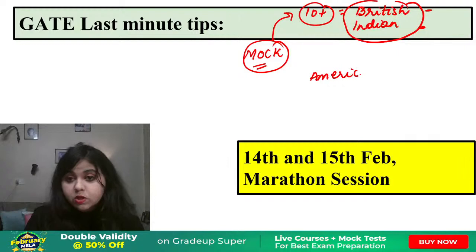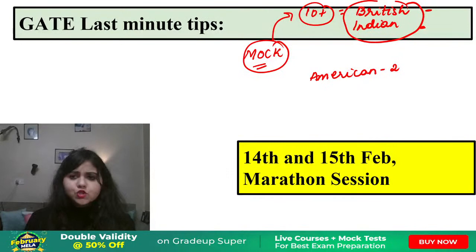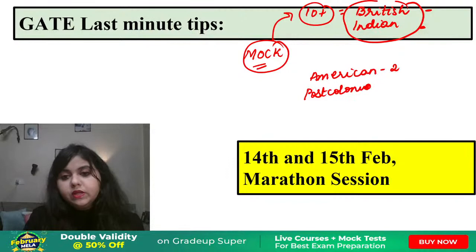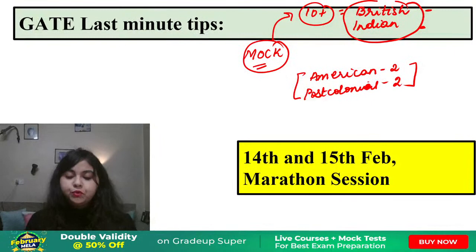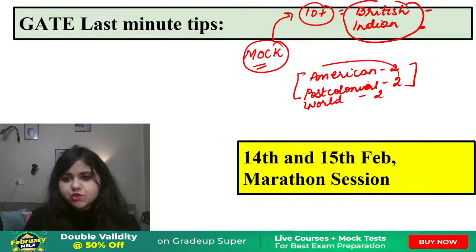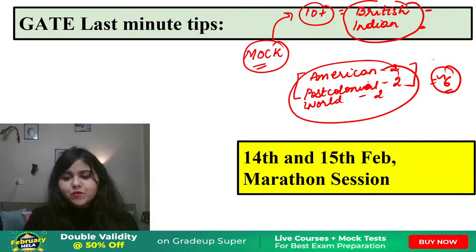They've given questions related to American writings - approximately two to three questions on American literature, including Afro-American writers like Morrison. There were also questions from post-colonial writing - about two questions. Clearly they're not giving a lot of attention to other world literature writers. British and Indian writers are very crucial right now. From world literature they've given approximately six questions. Literature is very bulky - they've formulated over 40 questions from literature alone.